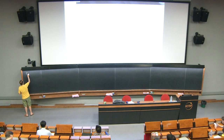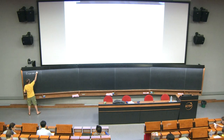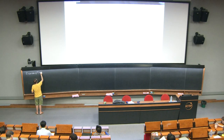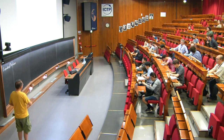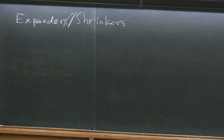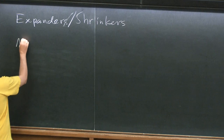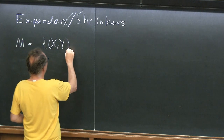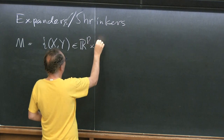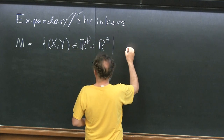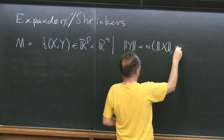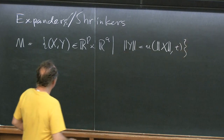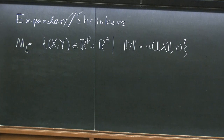Today I'm going to address the issue of expanders and shrinkers in the case of SO(p) × SO(q) symmetry. We'll look at hypersurfaces M of this form evolving by mean curvature flow.